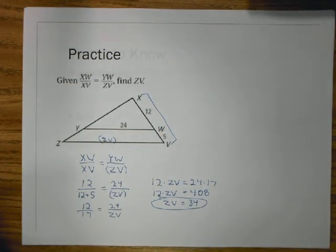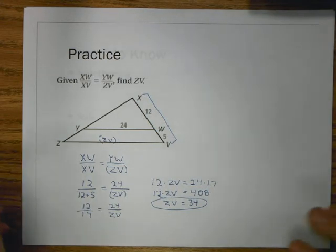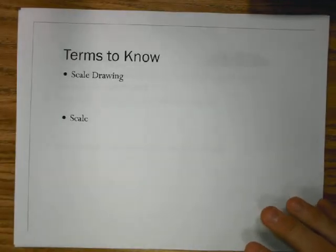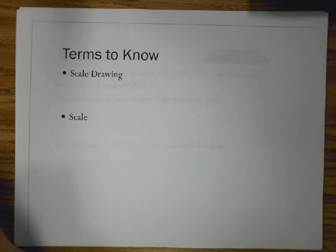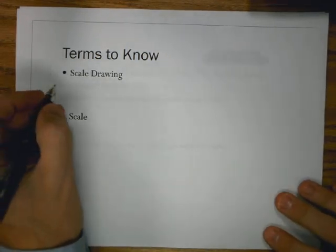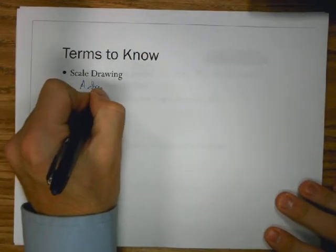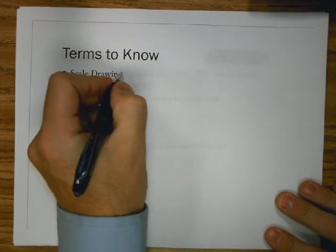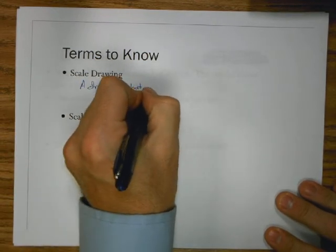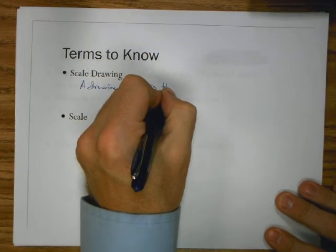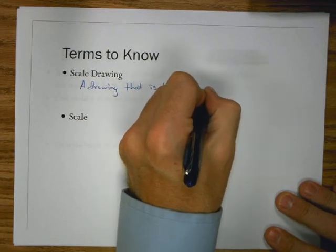On the homework, they'll give you the proportion — plug the values in and solve correctly. A key example is knowing that XV = 17, not just 5 or 12, but the full segment. In future sections, you'll be given the diagram and need to create the proportions yourself.